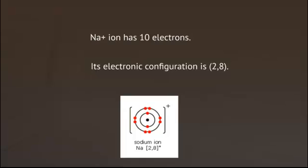Now, sodium ion has 10 electrons and its electronic configuration is given by 2, 8. That is, we can write it as 1s², 2s², 2p⁶.